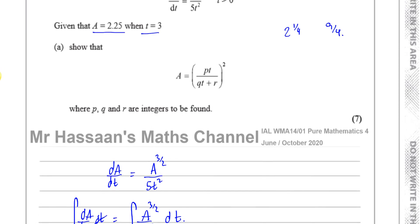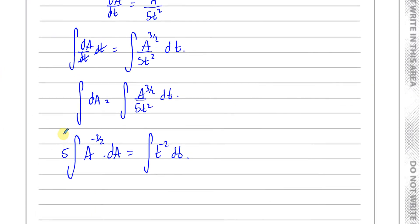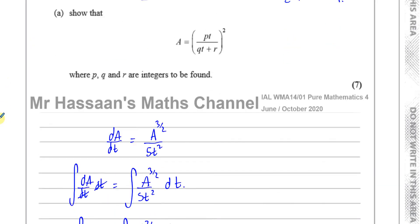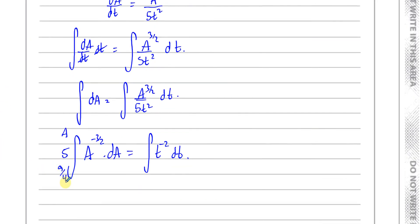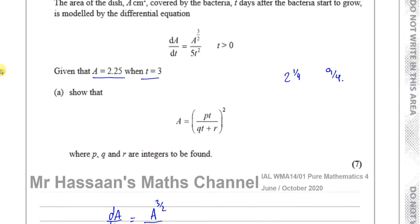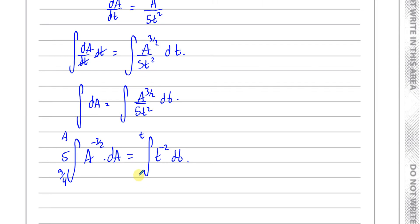When A is 2.25, t is 3. So I'm going to put the limits A and 9/4 on the left side, and t and 3 on the right side. This will save us from writing the constant of integration — it will find the value of c automatically.